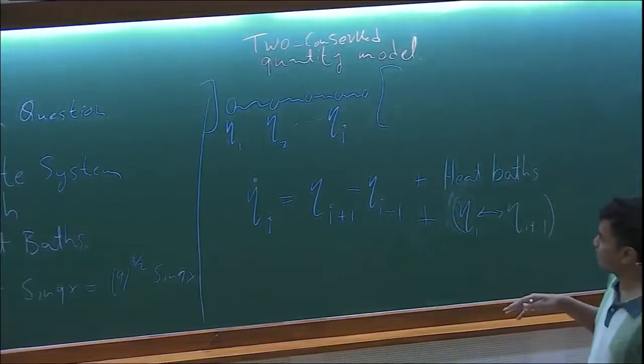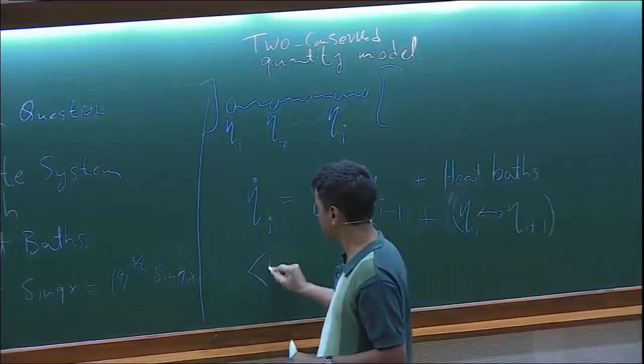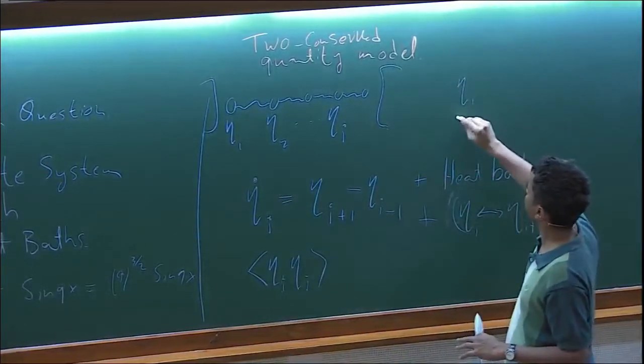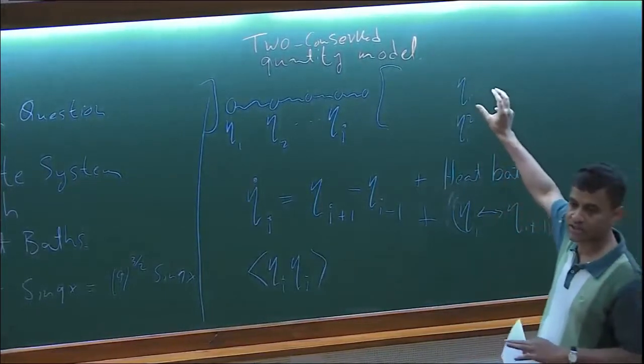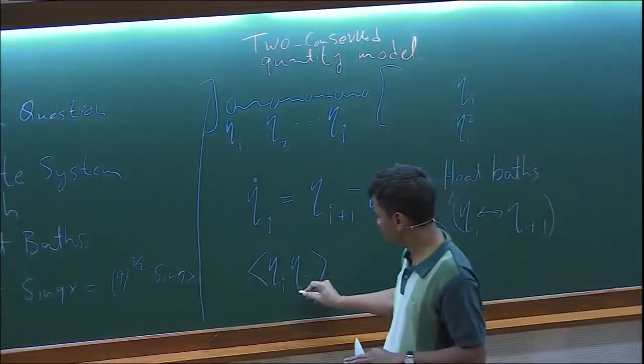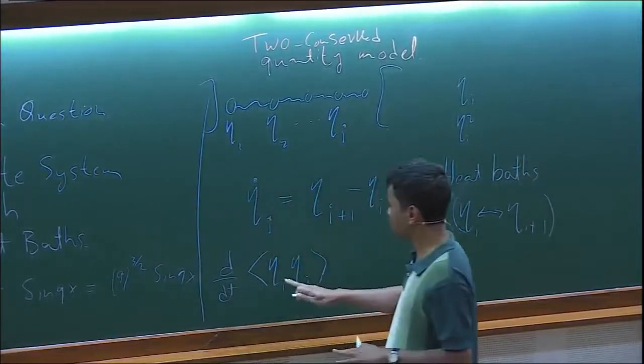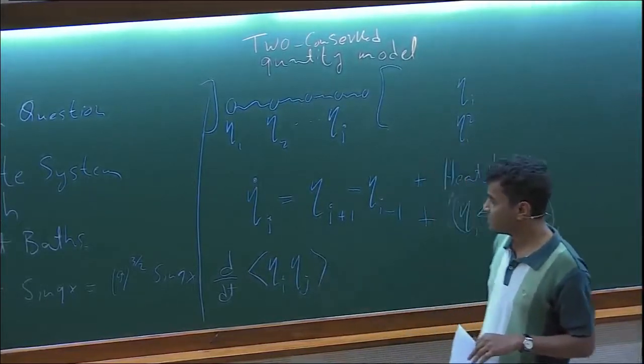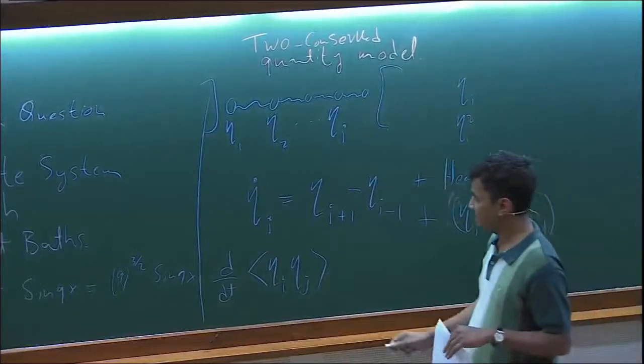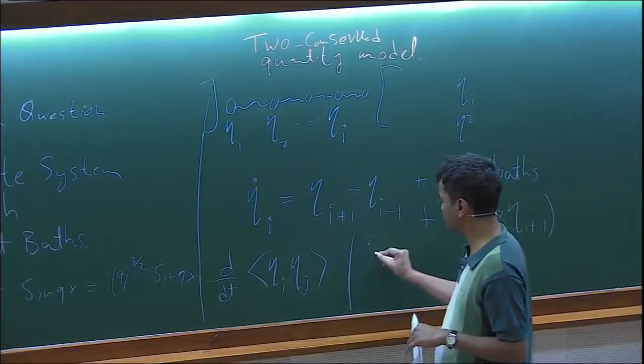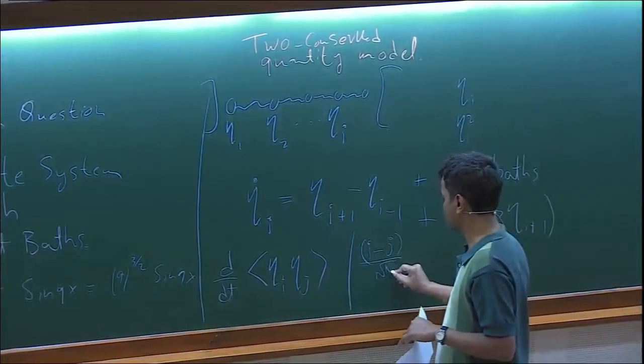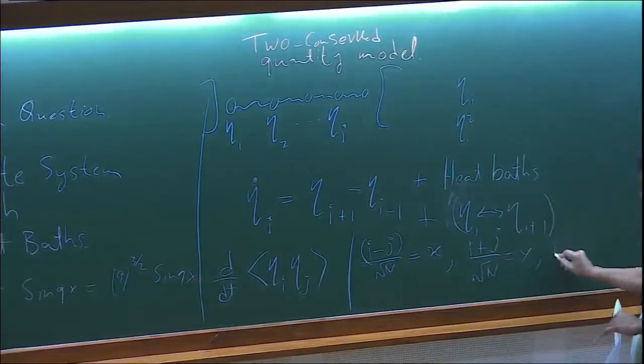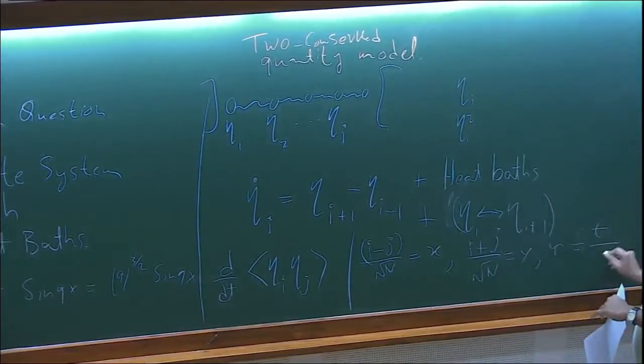So in this model, it turns out that for this dynamics, you can write an exact set of equations for two-point correlations. The conserved quantities in this model are eta i and eta i square. You have just two conserved quantities. You can think of this as volume and energy. Now you can write exact equations for these quantities. Two-point correlations form a closed set of equations. Even though it's a non-integrable model, somehow the two-point correlations close upon themselves. These are n square equations. What you can then do is go to some scaling limit where you define i minus j by root of n equals some variable x and i plus j by root of n equals y and time as g by n to the power 3 by 2.